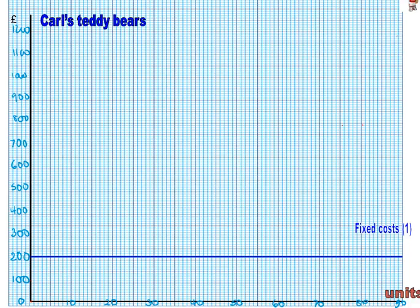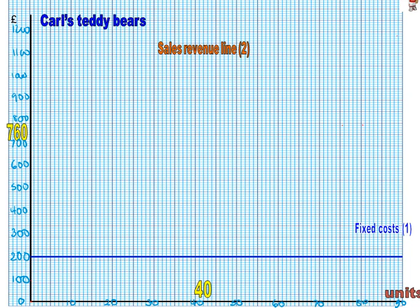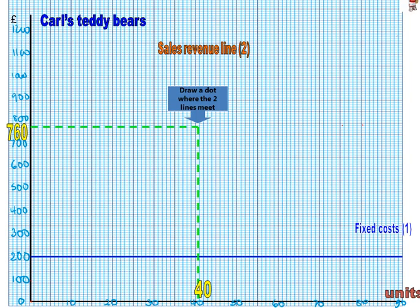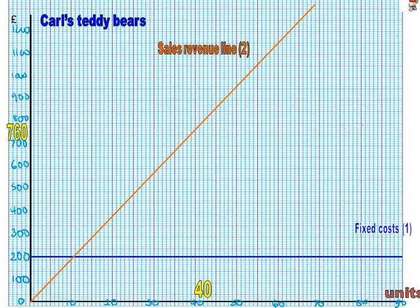The second line — I suggest you draw this line second — is the revenue line. We worked out that 40 teddy bears gives revenue of £760, so you need to put a dot at £760 on the y-axis and a dot at 40 on the x-axis. Then use your fingers to find where the two points meet and draw a dot there — you don't actually need to draw the dotted lines. Draw the revenue line through that dot starting from zero, because if you sell nothing you make no revenue.